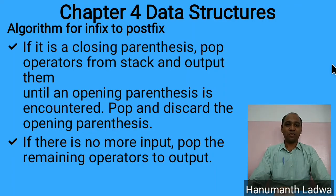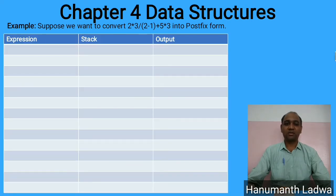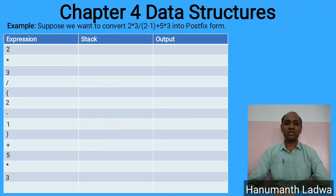Now let us work through an example. We want to convert the expression 2 * 3 / (2 - 1) + 5 * 3 into postfix form. We will maintain three columns: the current expression token, the stack contents, and the output. We scan the expression from left to right, writing tokens in order: 2, *, 3, /, (, 2, -, 1, ), +, 5, *, 3.